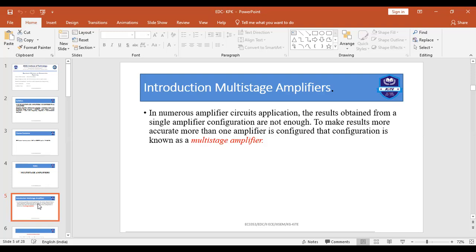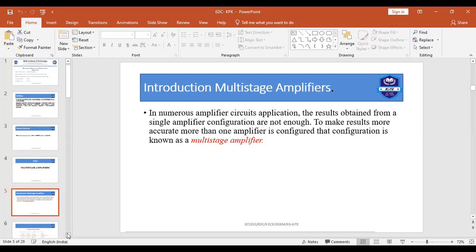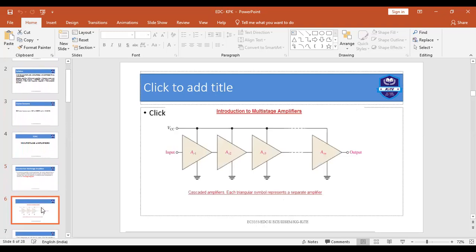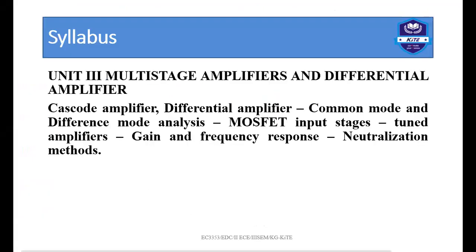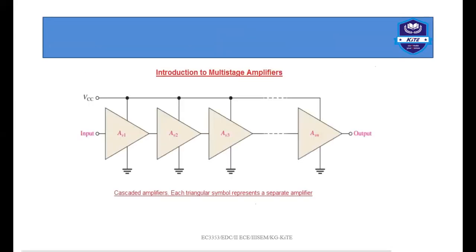In numerous amplifier circuit applications, the results obtained from a single stage configuration are not enough. In order to get better and more accurate results, more than one amplifier is configured together — that configuration is known as a multi-stage amplifier. Cascading means that an input is given to the first amplifier, and its output is taken and given to the second amplifier's input, and so on.